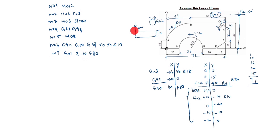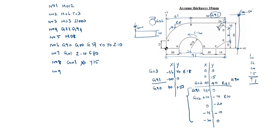N08: G01. We start from 0,0 — X0, Y0. After that we start from here: X0, Y15, so we write Y15. N09: G02, X41, Y40 or 41. Up to here is G90 code. Here to the full path is G91 code. Now we start G91 code.